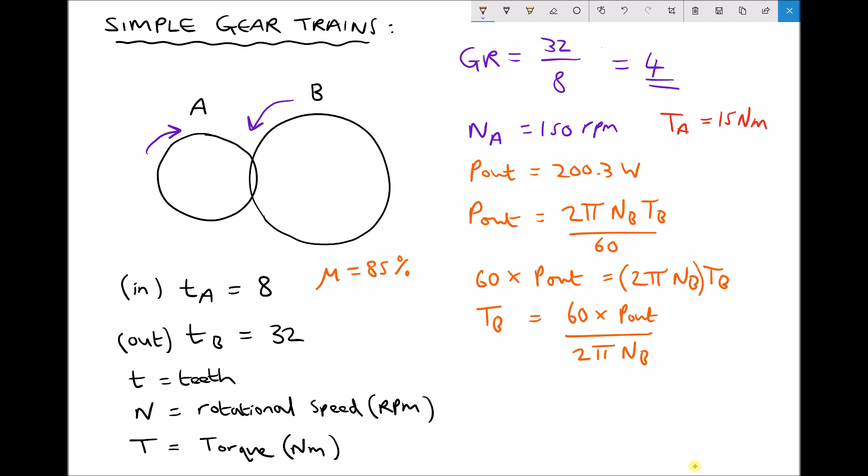OK, now let's plug our values in. We have 60 times 200.3 over 2π n b, as we calculated earlier, was 37.5.